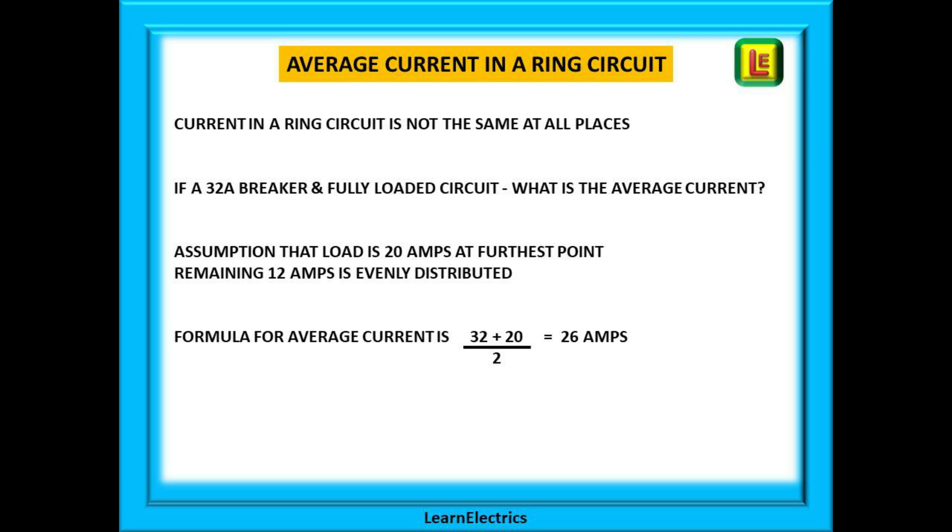If we have a fully loaded 32 amp circuit, what then is the average current? We made an assumption earlier that the furthest point of use, the midpoint, would have a 20 amp demand and that the remaining current is evenly distributed. We can use a little formula now.